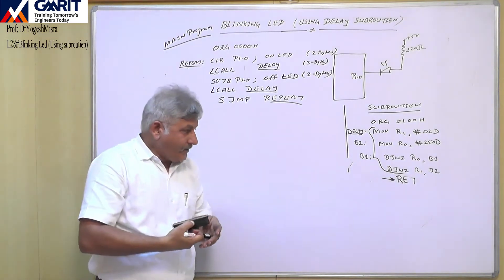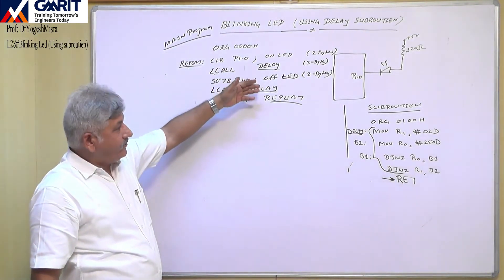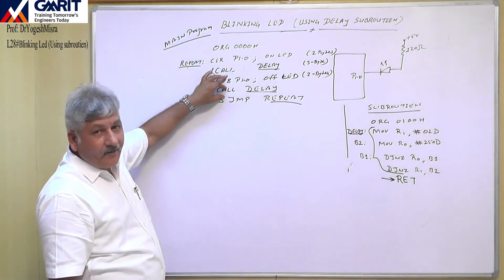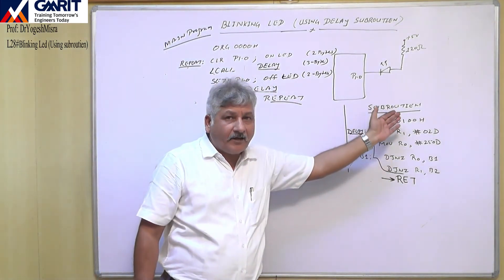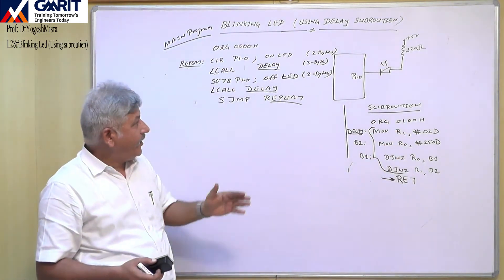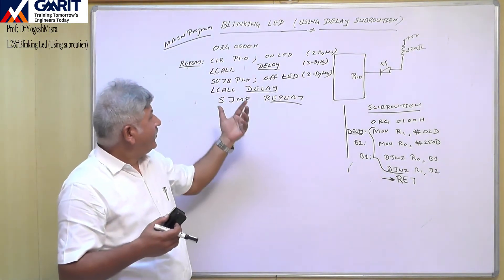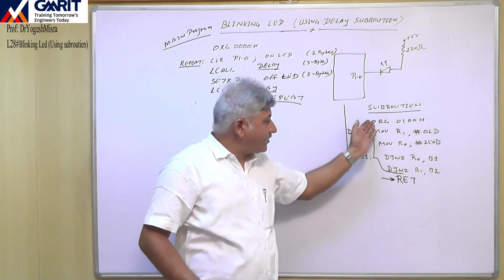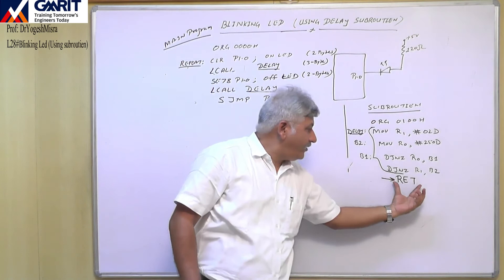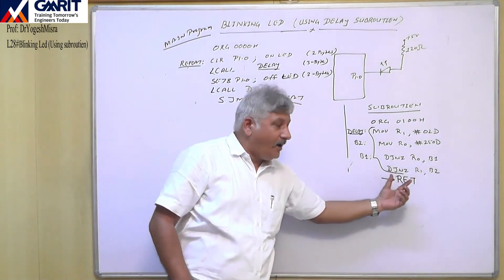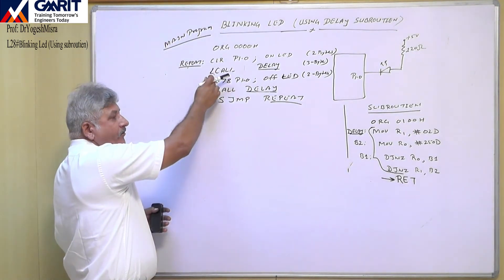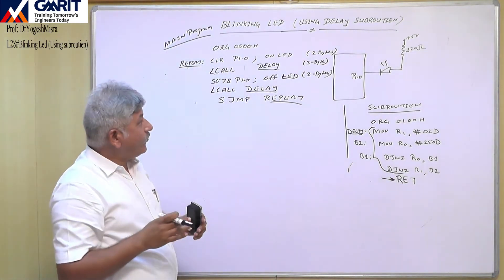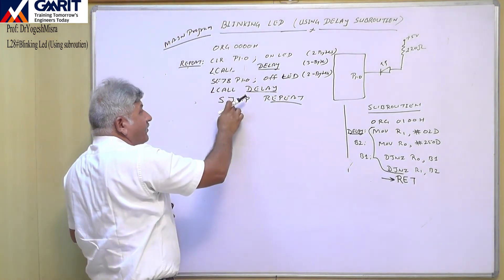Now you can see that in the previous approach we wrote those delay instructions both here and here, but now we have written them once as a subroutine. Whenever we require a delay of one millisecond in our main program, we simply transfer program execution to this particular subroutine using LCALL.